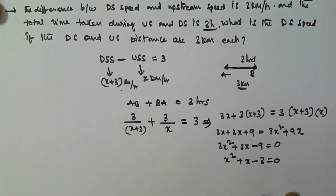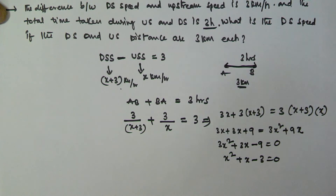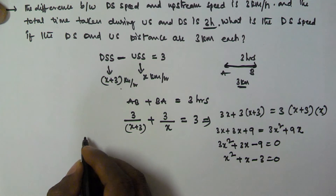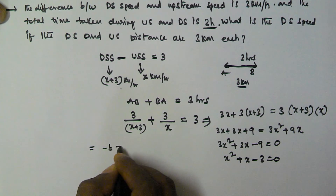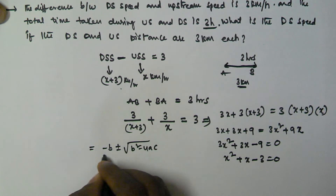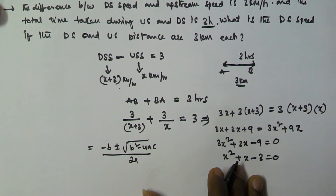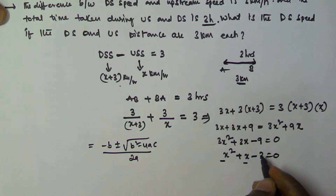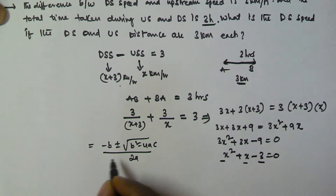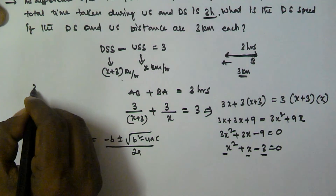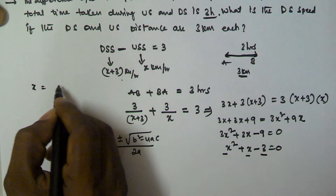We know there is a formula to find the roots of a quadratic equation: x equals minus b plus or minus the square root of (b² minus 4ac), all divided by 2a. Here, b is the coefficient of x, a is the coefficient of x², and c is the constant part. By substituting these values, the value of x is: